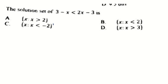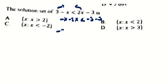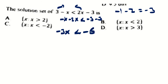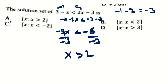The next question is an inequality: 3 minus 6x less than 2x minus 3. Collect x values to the left side: negative 6x minus 2x will be negative 3x. Shift the 3: minus 3 minus 3 gives negative 6 on the right side. So negative 3x less than negative 6. Divide both sides by negative 3 — the inequality changes direction. So x is greater than 2. The answer is found in A.